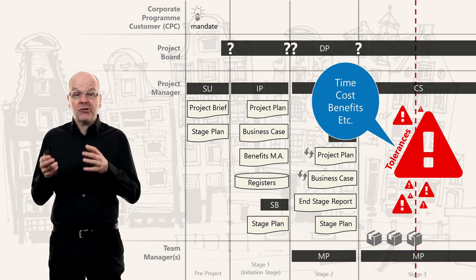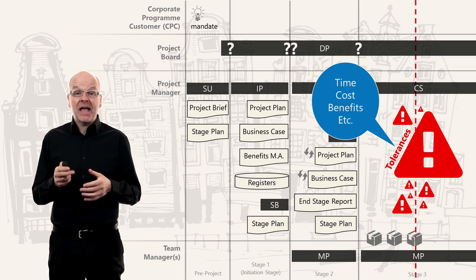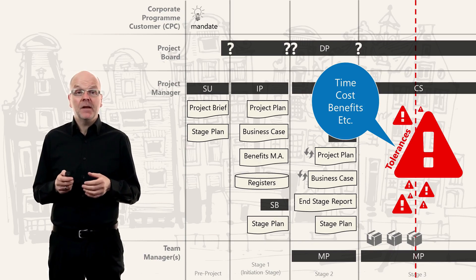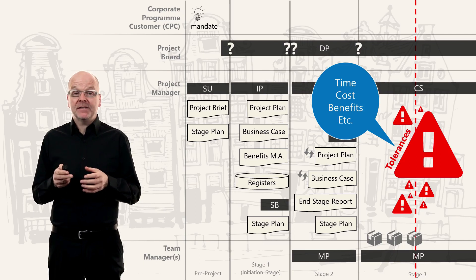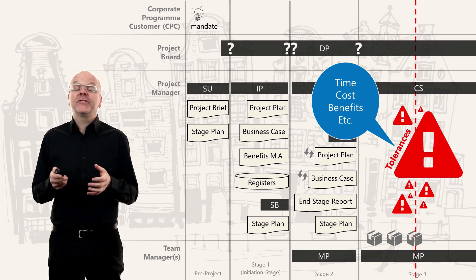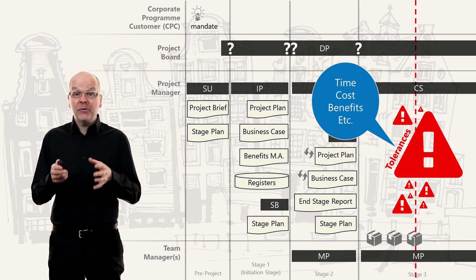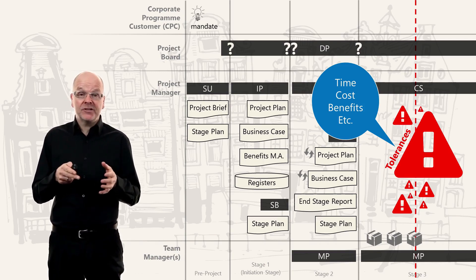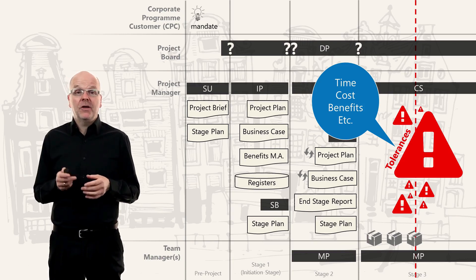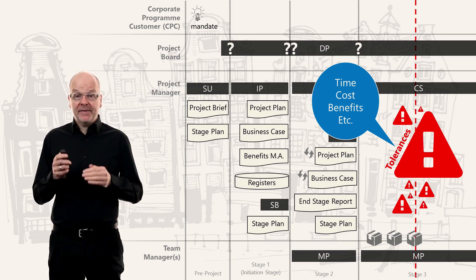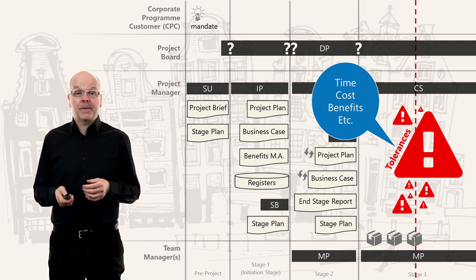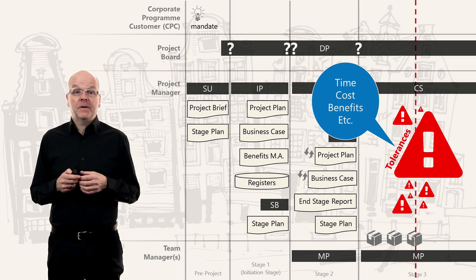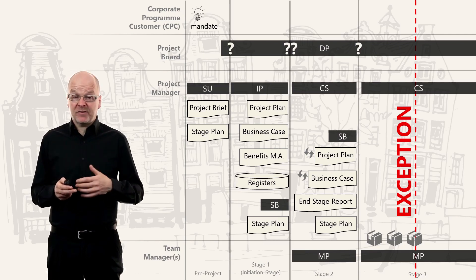If costs increase by only 8 percent, the project manager can take action and spend money to deal with these issues. But if the costs go above 20 percent and the tolerance is only 10 percent, this is outside the project manager's tolerance — they must escalate this issue to the level above. An issue that brings us out of tolerance is called an exception.